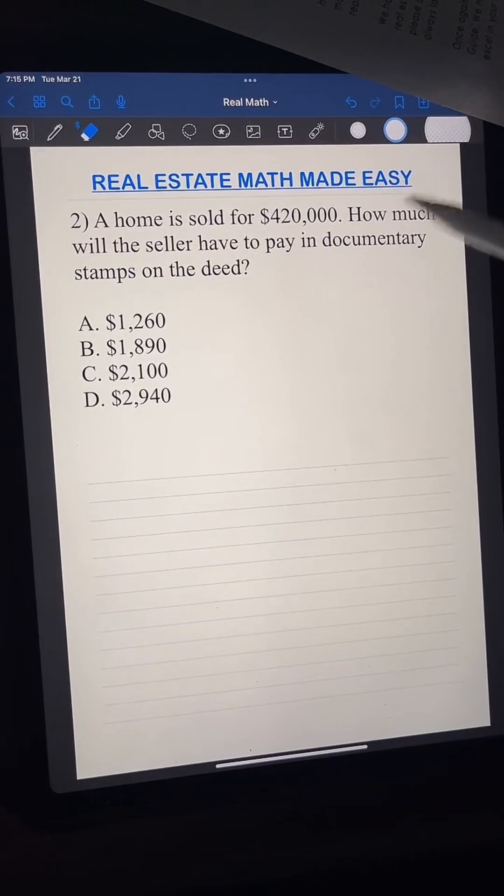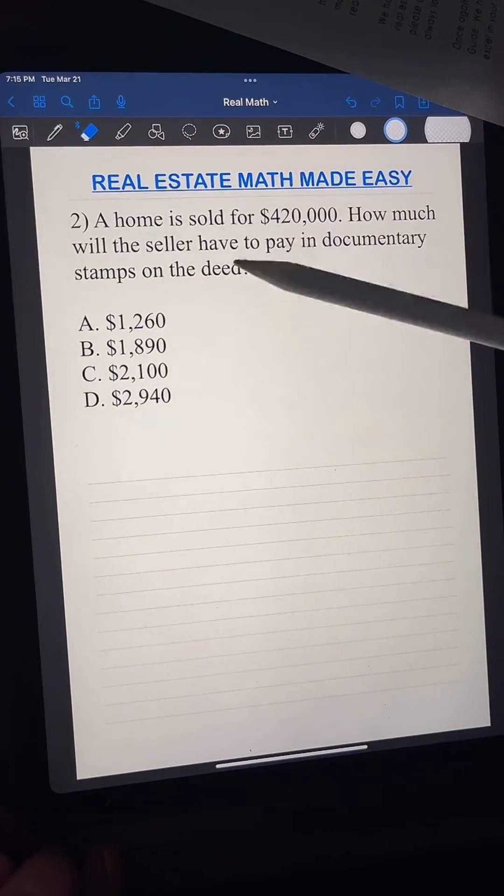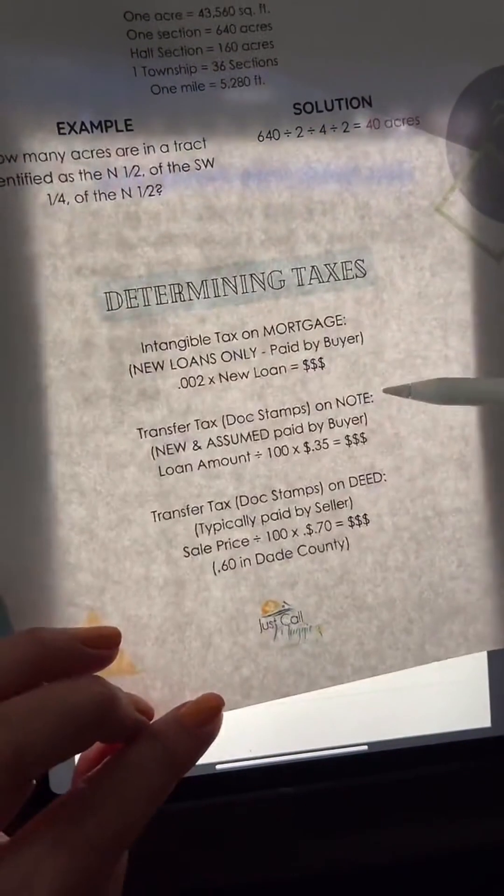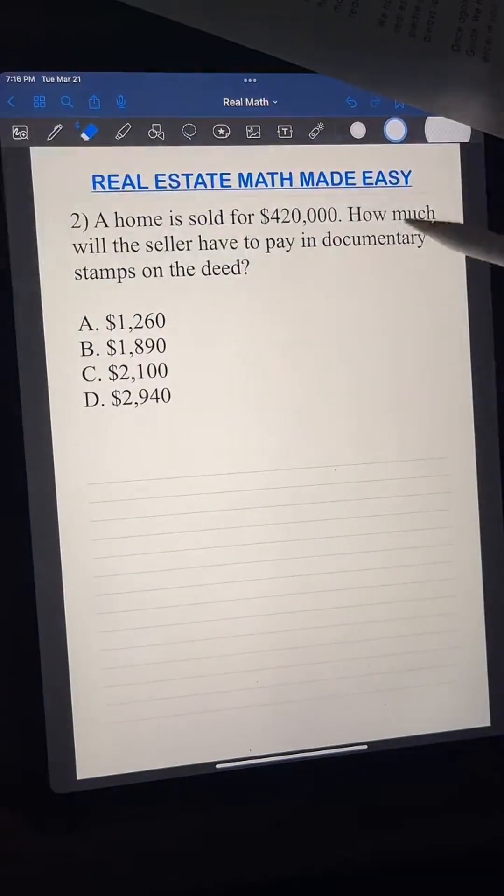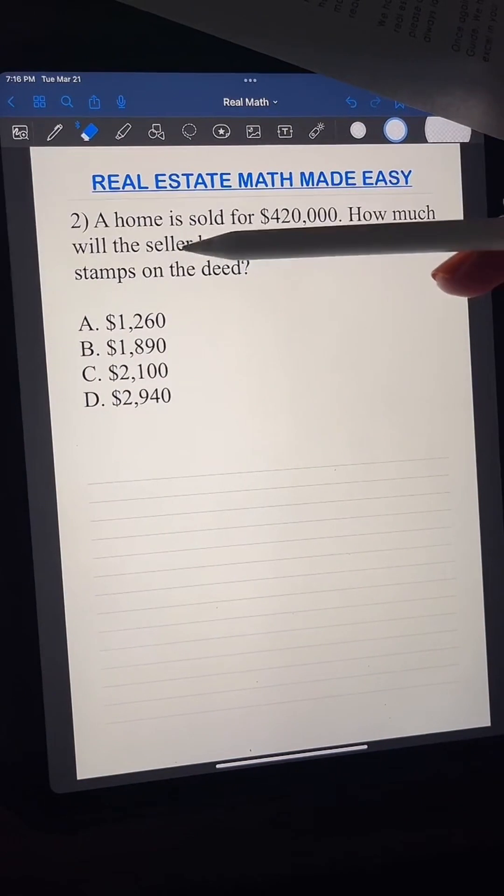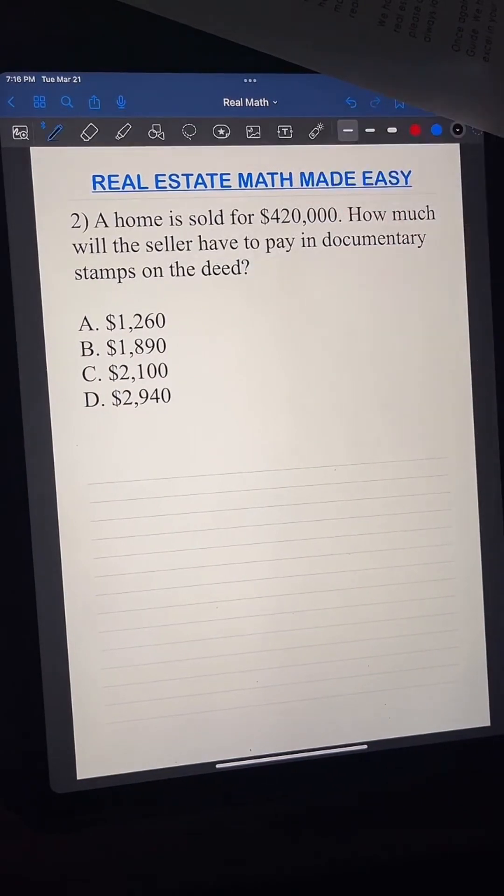A home is sold for $420,000. How much will the seller have to pay in documentary stamps on the deed? All right, so if we remember doc stamps on the deed right here, okay, because it's a seller. Seller pays doc stamps on deed, not doc stamps on the note.